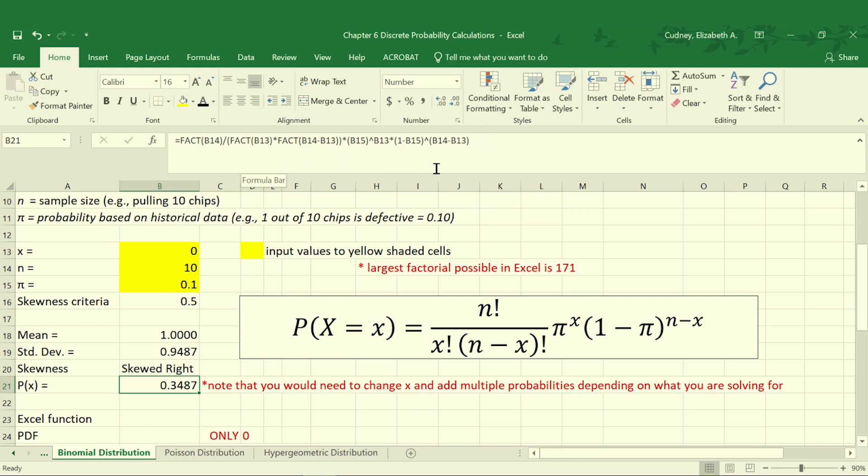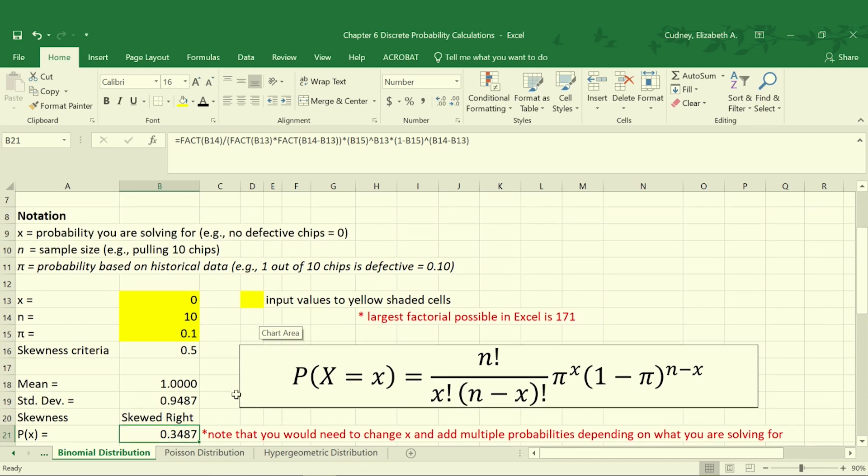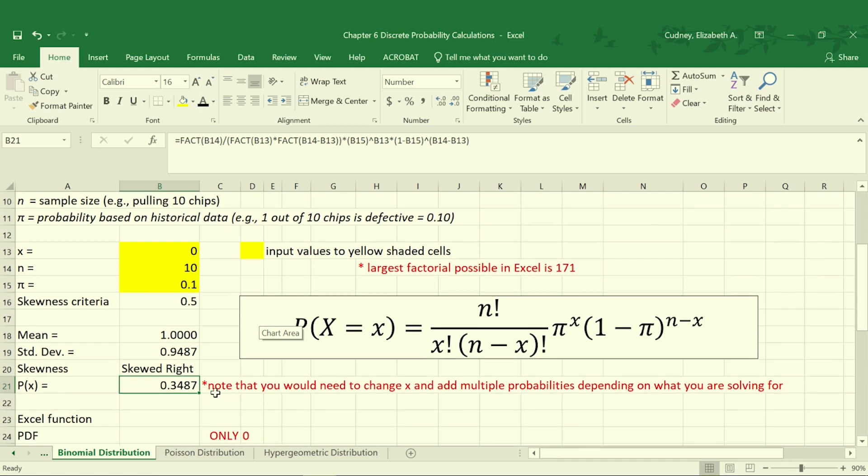So as we go through our calculation, our probability that we have exactly 0 defects is 0.3487 or 34.87 percent. A fairly low probability that we would have no defects when we pull out that sample size. This calculation is pretty long and pretty tedious.